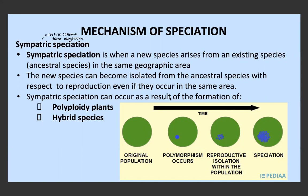Sympatric speciation can occur as a result of the formation of polyploidy in plants, hybrid species, or other examples. This diagram shows the process of sympatric speciation where we have an original population, then a polymorphism or mutation occurs, and we then have reproductive isolation within this larger population and eventually speciation occurs. This little group of individuals becomes so genetically different from the original population that it eventually becomes a new species.